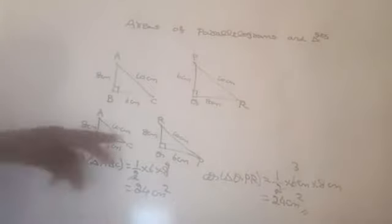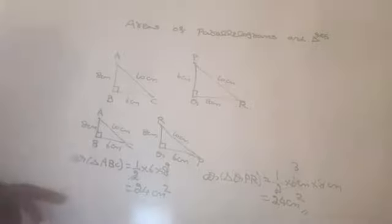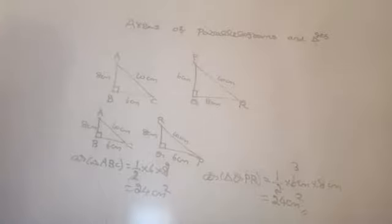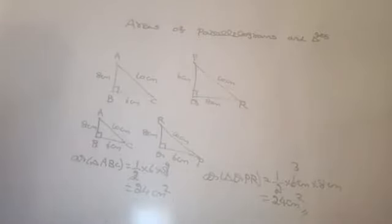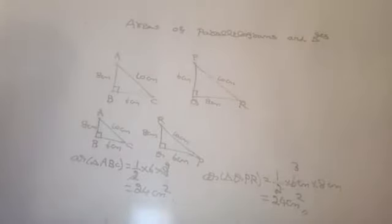We proved that these two triangles are congruent, and at the same time the areas of these two triangles are also equal. So we conclude: if two figures are congruent, then the areas of the two figures are equal — for triangles, quadrilaterals, and any n-sided polygon. But the converse is not true: if the areas of the two figures are equal, it need not mean they are congruent to each other.